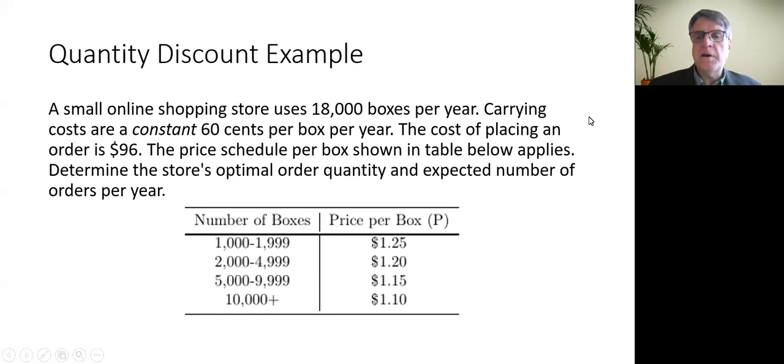Let's see how this goes just as a sample calculation. We've got a small online shopping store that uses 18,000 boxes a year. Carrying costs are a constant 60 cents per box per year, irrespective of what you pay for them. And the cost of placing an order for boxes is $96. The price schedule is shown down here. It decreases as the order size increases. What we want to do is determine the store's optimal order quantity and expected number of orders per year.